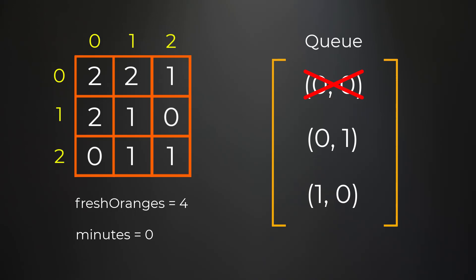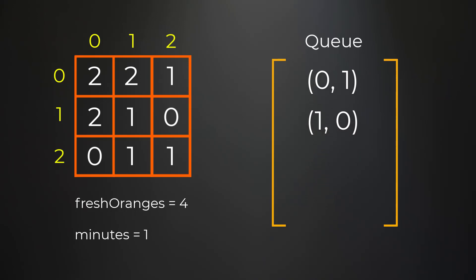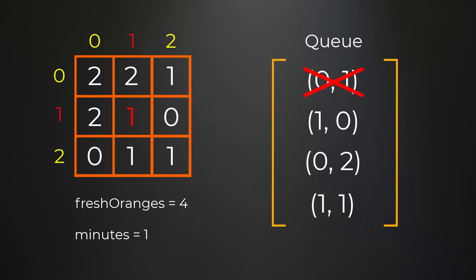Since we just completed this iteration we increase our minutes by one. For the second iteration we pull from our queue twice because we have two elements. We pop coordinate (0,1) and add the right and down positions since they also have fresh oranges. We change those fresh oranges to rotten and decrease our count from four to two. Then we pop from the queue a second time at position (1,0), but add nothing since all neighbors have no fresh oranges. We increase minutes again.